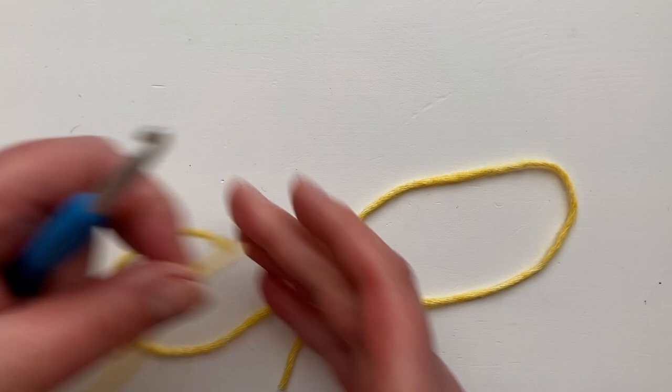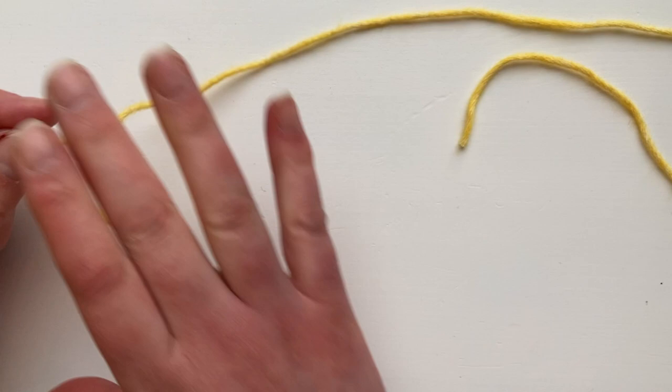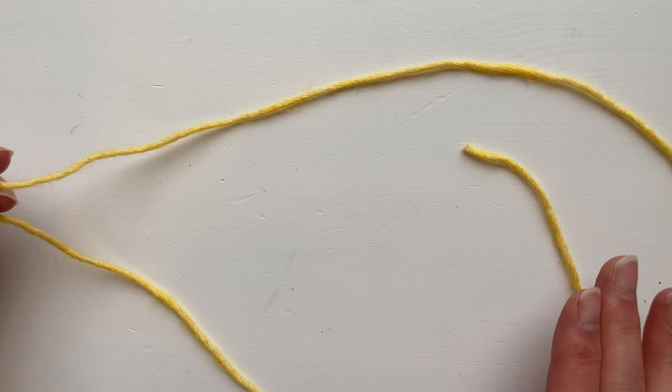The crochet long tail cast on uses both the tail end and the yarn end to create a really flexible foundation row. The first thing to think about though is how long does your tail need to be? Because if you're working through that tail well it's a bit of a disaster if you run out before you've got all your stitches cast on.